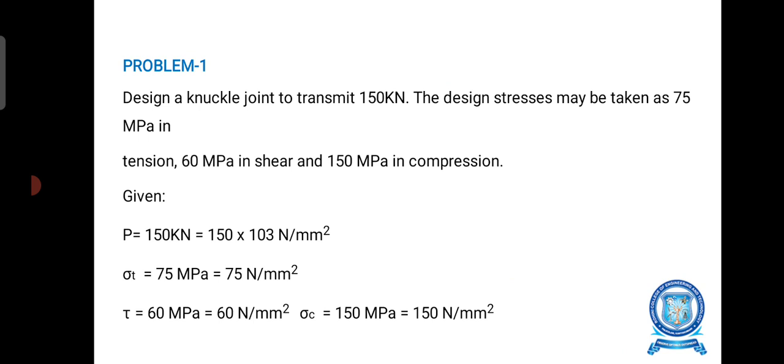Given data: P equal to 150 kN, that means 150 × 10³ N. Sigma T equal to 75 MPa, that means 75 N per mm². Tau equal to 60 MPa, that means 60 N per mm². Sigma C equal to 150 MPa, that means 150 N per mm².